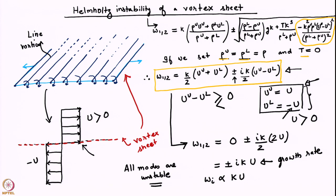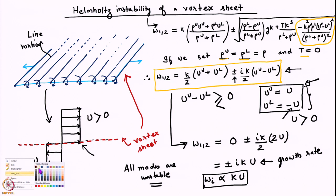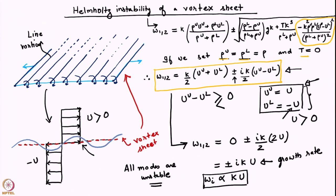The imaginary part of omega is actually equal to plus or minus k times U, so one of them will grow. This is what is predicted by this model: if we put a vortex sheet and perturb it with a Fourier mode, then independent of the wave number, every Fourier mode grows in time and all Fourier modes are unstable.